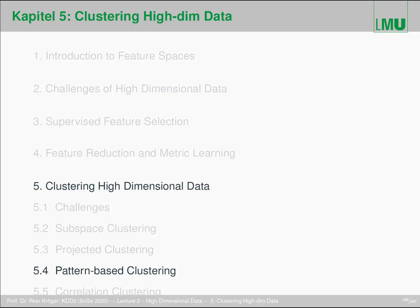Next up for today is pattern-based clustering, which is a little bit orthogonal to the classification hierarchy or taxonomy we've given for those methods. For clustering high-dimensional data we had subspace clustering, projected clustering, and focusing on axis-parallel subspace clusters, differing in bottom-up and top-down approaches for finding the subspaces. We'll have correlation clustering in two weeks — next week we will be off.